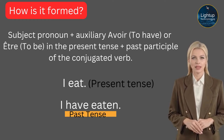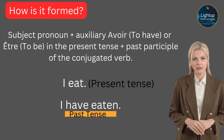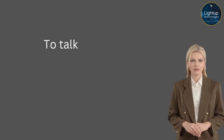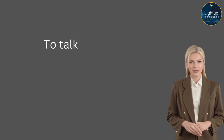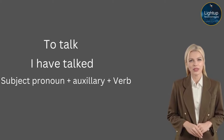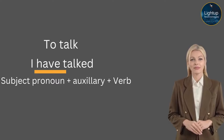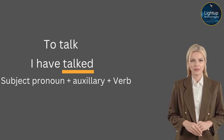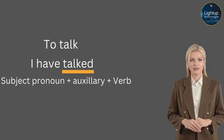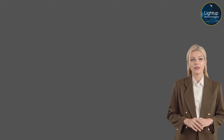First group verbs are much easier to conjugate because they follow a similar pattern compared to other verbs such as irregular verbs. For example, using the verb 'to talk' in English: use a subject pronoun — I — then add the auxiliary 'to have,' which gives us 'I have,' and the past participle is 'talked.' So we get 'I have talked.' We have transformed the verb 'talk' into 'talked' — that's what we call the past participle.